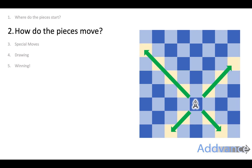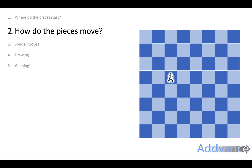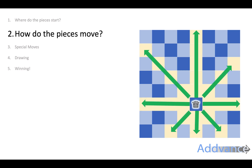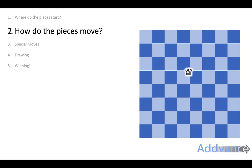Bishops can move diagonally — in diagonals, as far as they want. Queens can move like a rook or like a bishop. The queen can move forwards, diagonally, backwards, as many spaces as it wants. The queen is a very powerful piece — be careful not to lose your queen early on.